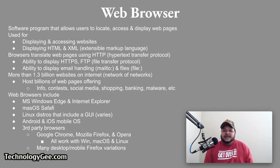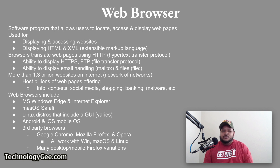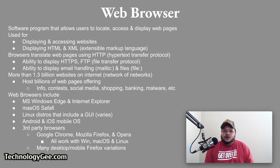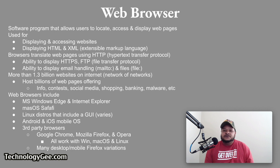Web browsers are included in Microsoft Windows, known as Edge or Internet Explorer; Safari on Mac; and Linux distributions that include a GUI. Android and iOS mobile operating systems also offer web browsers. Many third-party browsers are also available, such as Google Chrome, Mozilla Firefox, and Opera, all of which work with Windows, Mac, and Linux. There are also many variations based on Firefox available for desktop and mobile operating systems.